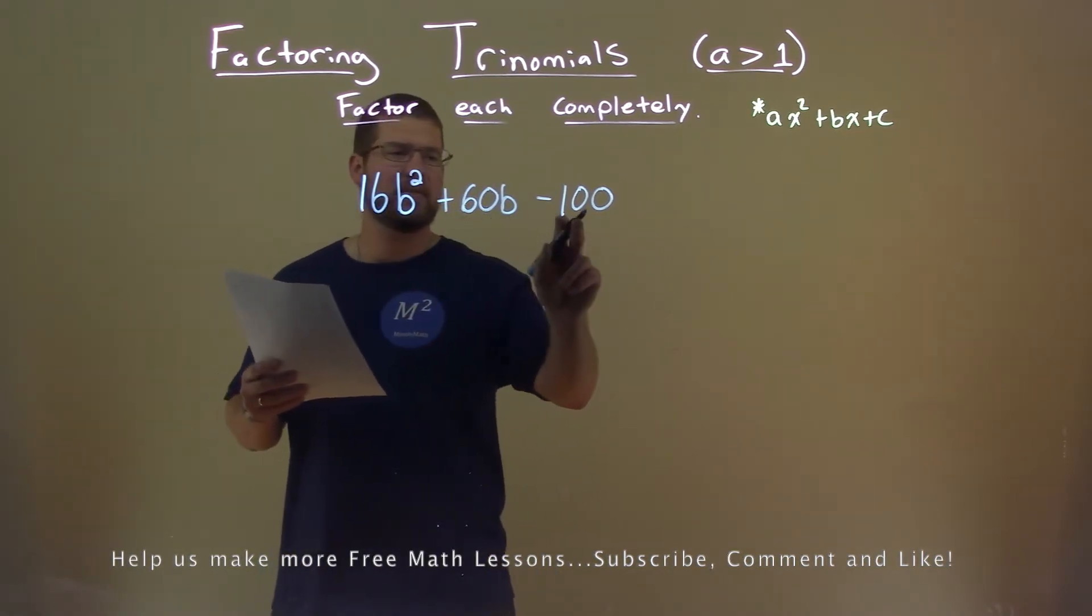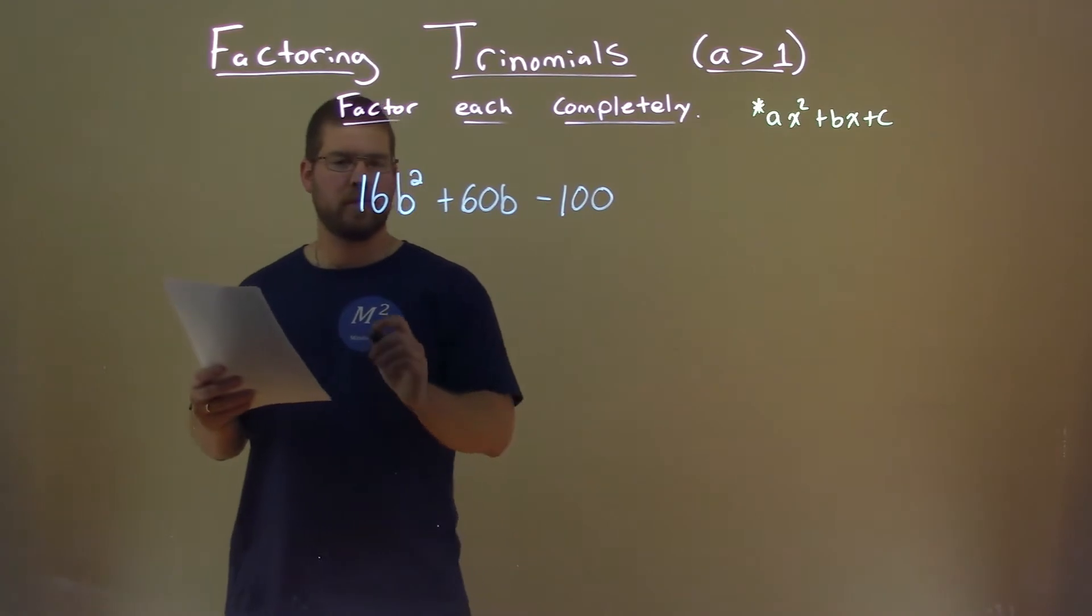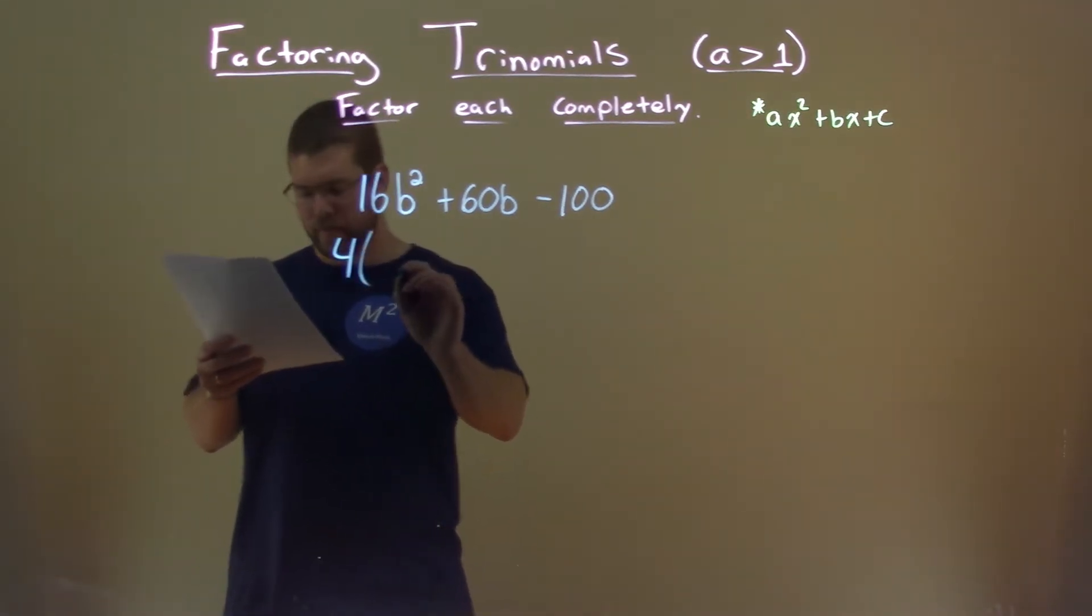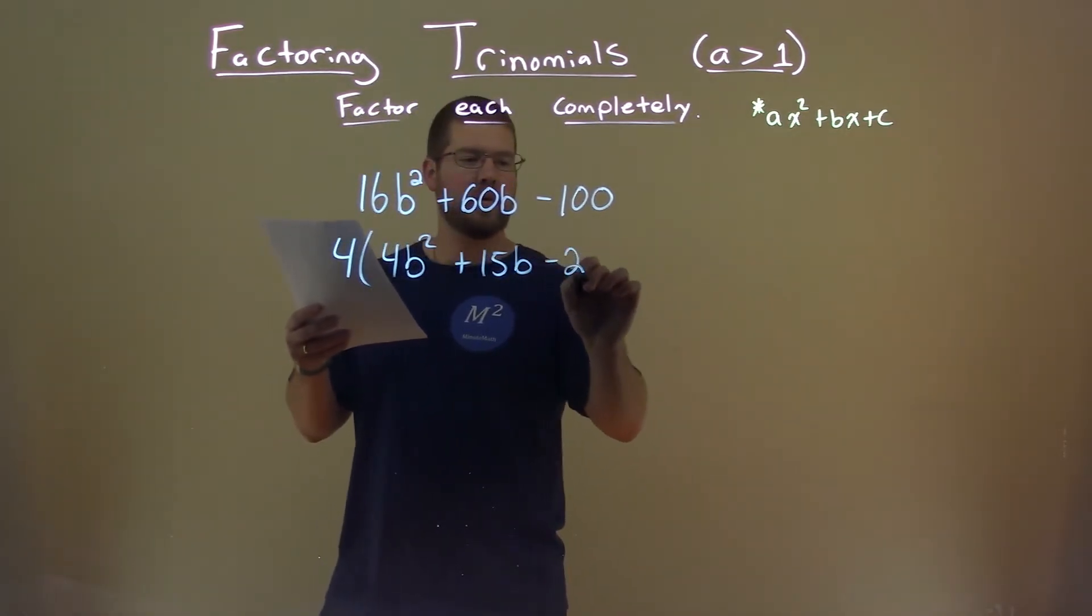First thing I'm looking at is I can probably pull out a common factor, and 4 goes into all of these parts. So if I pull out a 4, I'm left with 4b squared plus 15b minus 25.